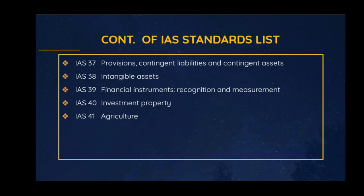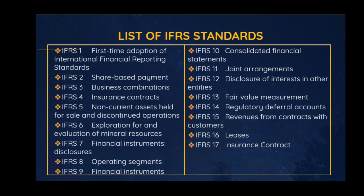Under the new body, IFRS, the accounting standards released so far include: IFRS 1 First-time Adoption of International Financial Reporting Standards, IFRS 2 Share-based Payment, IFRS 3 Business Combinations, IFRS 4 Insurance Contracts, IFRS 5 Non-current Assets Held for Sale and Discontinued Operations, IFRS 6 Exploration and Evaluation of Mineral Resources, IFRS 7 Financial Instruments Disclosures, IFRS 8 Operating Segments, IFRS 9 Financial Instruments, IFRS 10 Consolidated Financial Statements, IFRS 11 Joint Arrangements, IFRS 12 Disclosure of Interests in Other Entities, IFRS 13 Fair Value Measurement, IFRS 14 Regulatory Deferral Accounts, IFRS 15 Revenue from Contracts with Customers, IFRS 16 Leases, IFRS 17 Insurance Contracts.